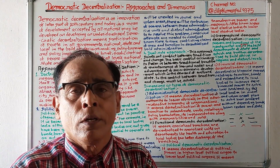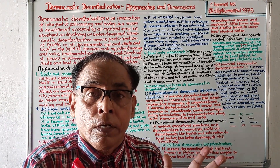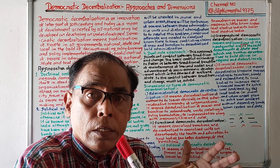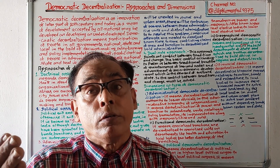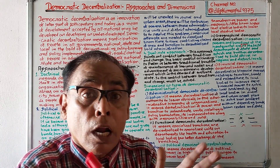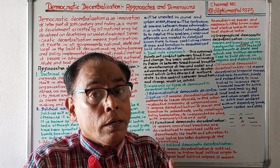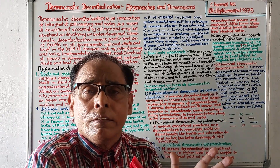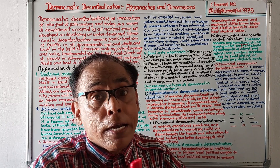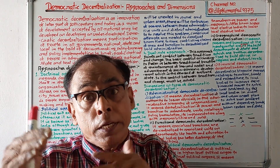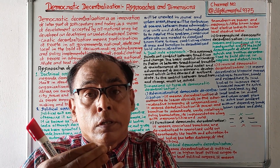Dual role approach speaks that whenever there is democratic decentralization, in addition to the traditional functions of the government — maintenance of law and order and collection of revenue — some new socioeconomic development functions will have to be added. Socioeconomic development is the demand of the welfare state, and must be carried out alongside traditional functions.